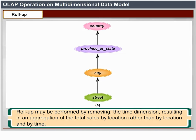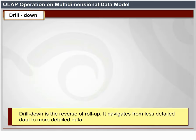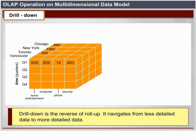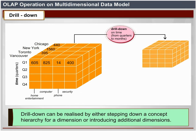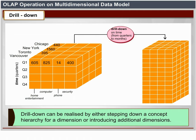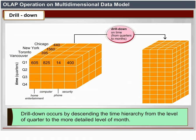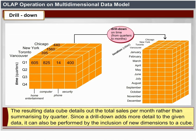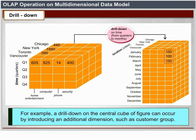Drill-down is the reverse of roll-up; it navigates from less detailed data to more detailed data. Drill-down can be realized by either stepping down a concept hierarchy for a dimension or introducing additional dimensions. Drill-down occurs by descending the time hierarchy from the level of quarter to the more detailed level of month, resulting in data that details total sales per month rather than summarizing by quarter. Because a drill-down adds more detail, it can also be performed by adding new dimensions, such as customer group, to a cube.